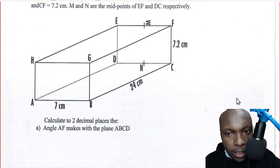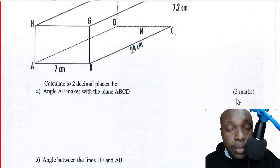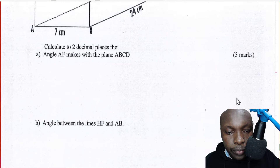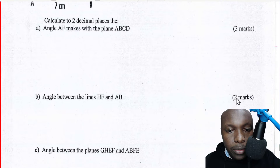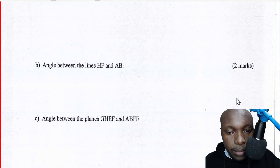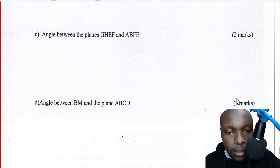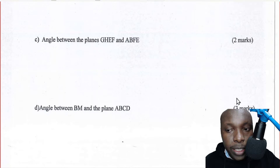The first question asks us to calculate to two decimal places: (a) the angle AF makes with the plane ABCD, (b) the angle between lines HF and AB, (c) the angle between the planes GHEF and ABFE, and (d) the angle between BM and the plane ABCD.